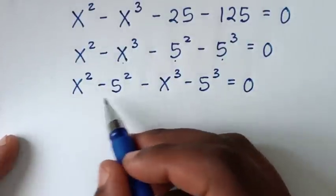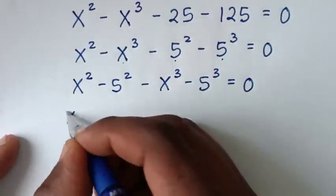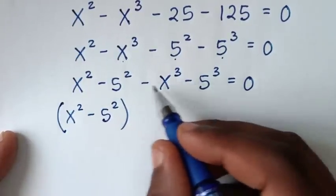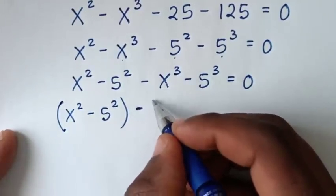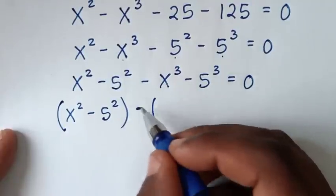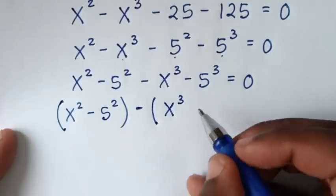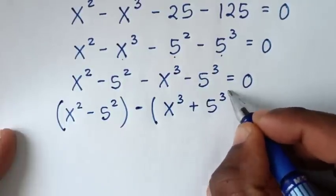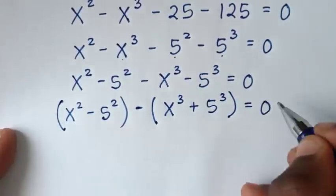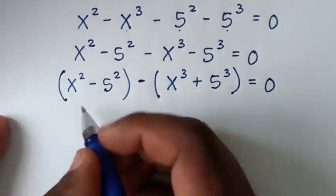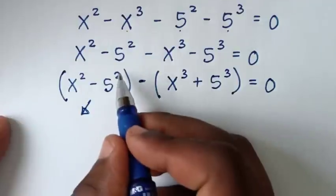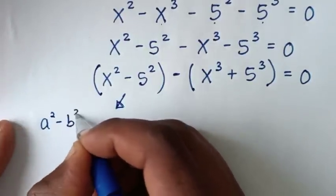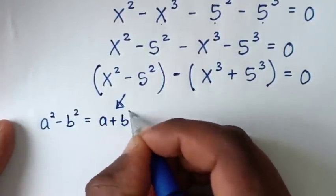Then we'll place it in brackets. Inside the bracket it will be x squared minus 5 squared. And here we'll take negative outside of the bracket, so negative x power 3 divided by negative is positive x power 3, and negative 5 power 3 divided by negative is positive 5 power 3. We'll apply the perfect square rule, which is a squared minus b squared is equal to a plus b bracket, a minus b bracket.